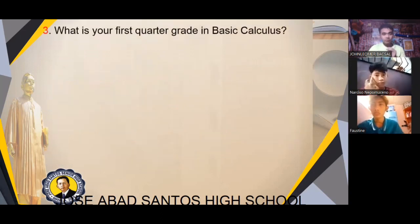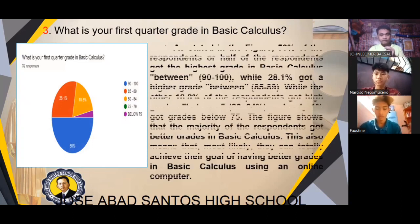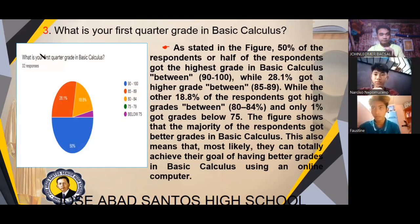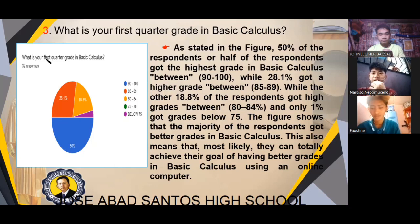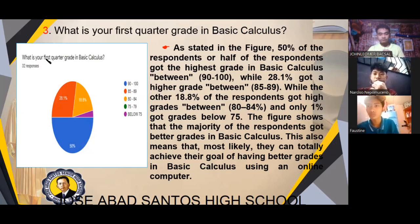For our SOP3: What is your first quarter grade in basic calculus? Here are the results from our survey. As stated in the figure, 50% of the respondents got the highest grade in basic calculus between 90 to 100, while 28.1% got a higher grade between 85 to 89. The other 18.8% of the respondents got grades between 80 to 84, and only 1% got grades below 75. The figure shows that the majority of the respondents got better grades in basic calculus, meaning they can achieve their goal of having better grades using an online computer.